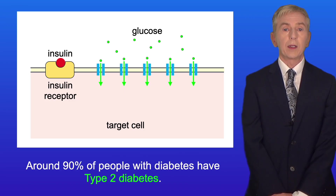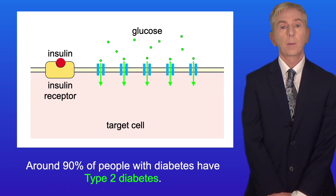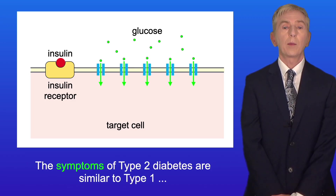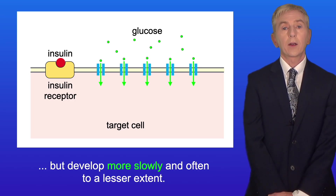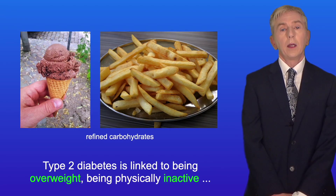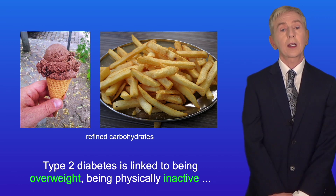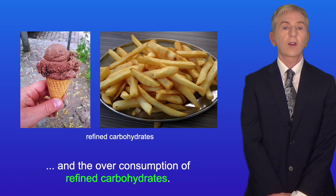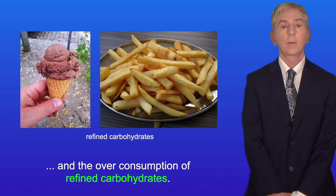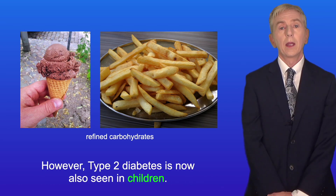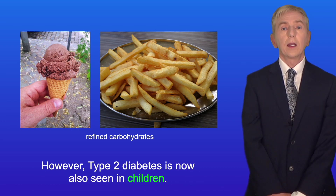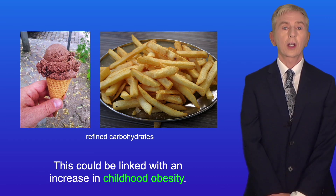Around 90% of people with diabetes have type 2 diabetes. The symptoms of type 2 diabetes are similar to type 1, but develop more slowly and often to a lesser extent. Type 2 diabetes is linked to being overweight, being physically inactive, and the overconsumption of refined carbohydrates. In the past, type 2 diabetes was diagnosed mainly in adults; however, it is now also seen in children, which could be linked with an increase in childhood obesity.